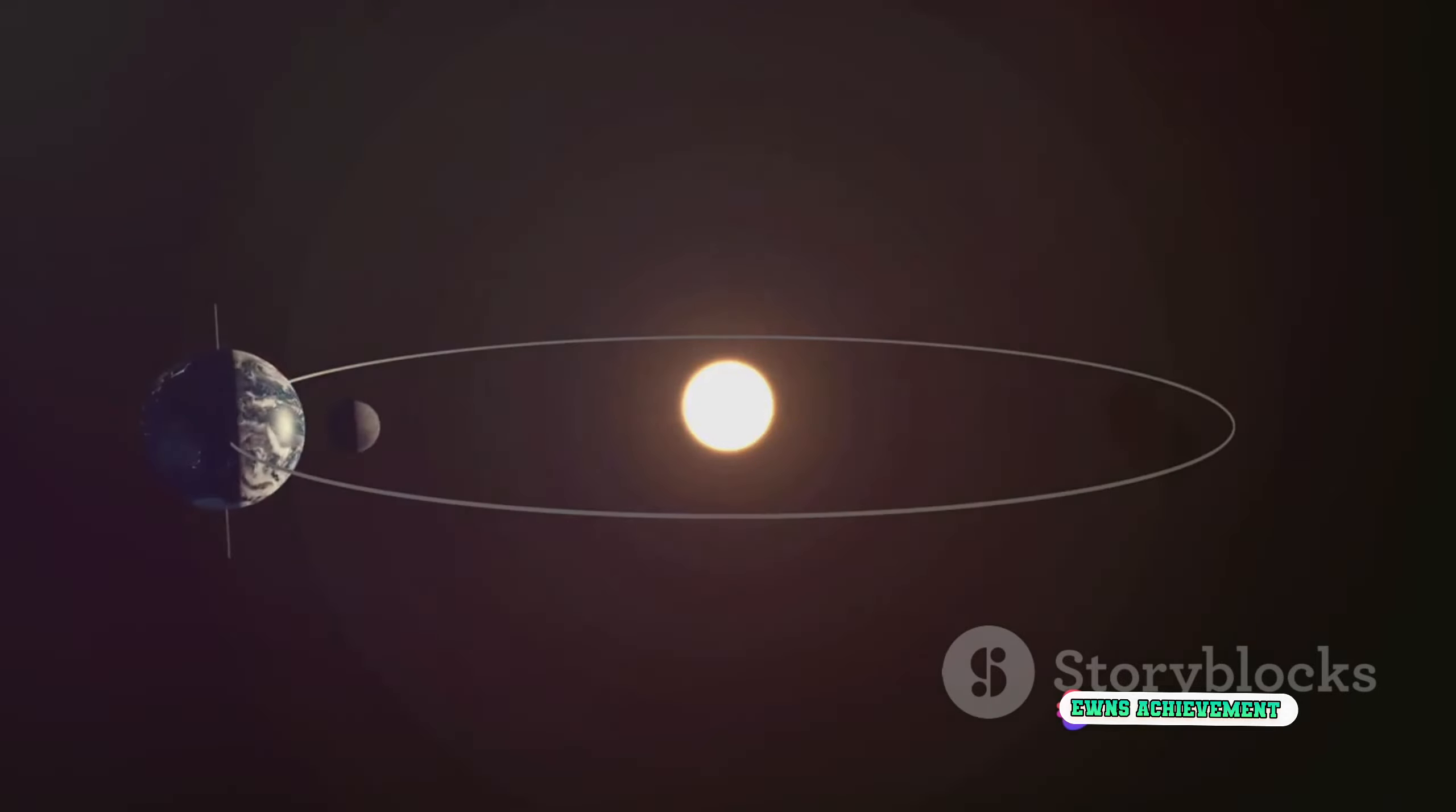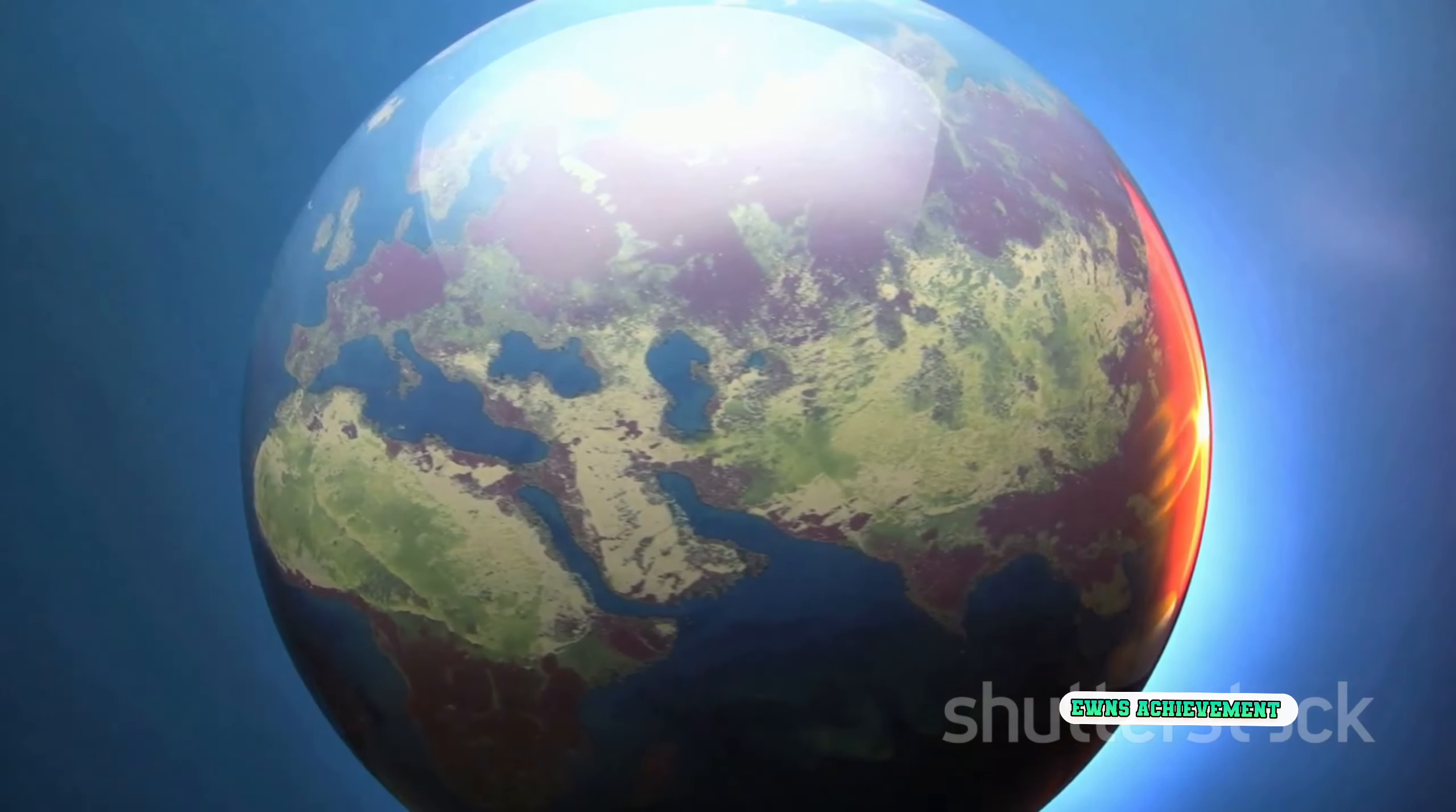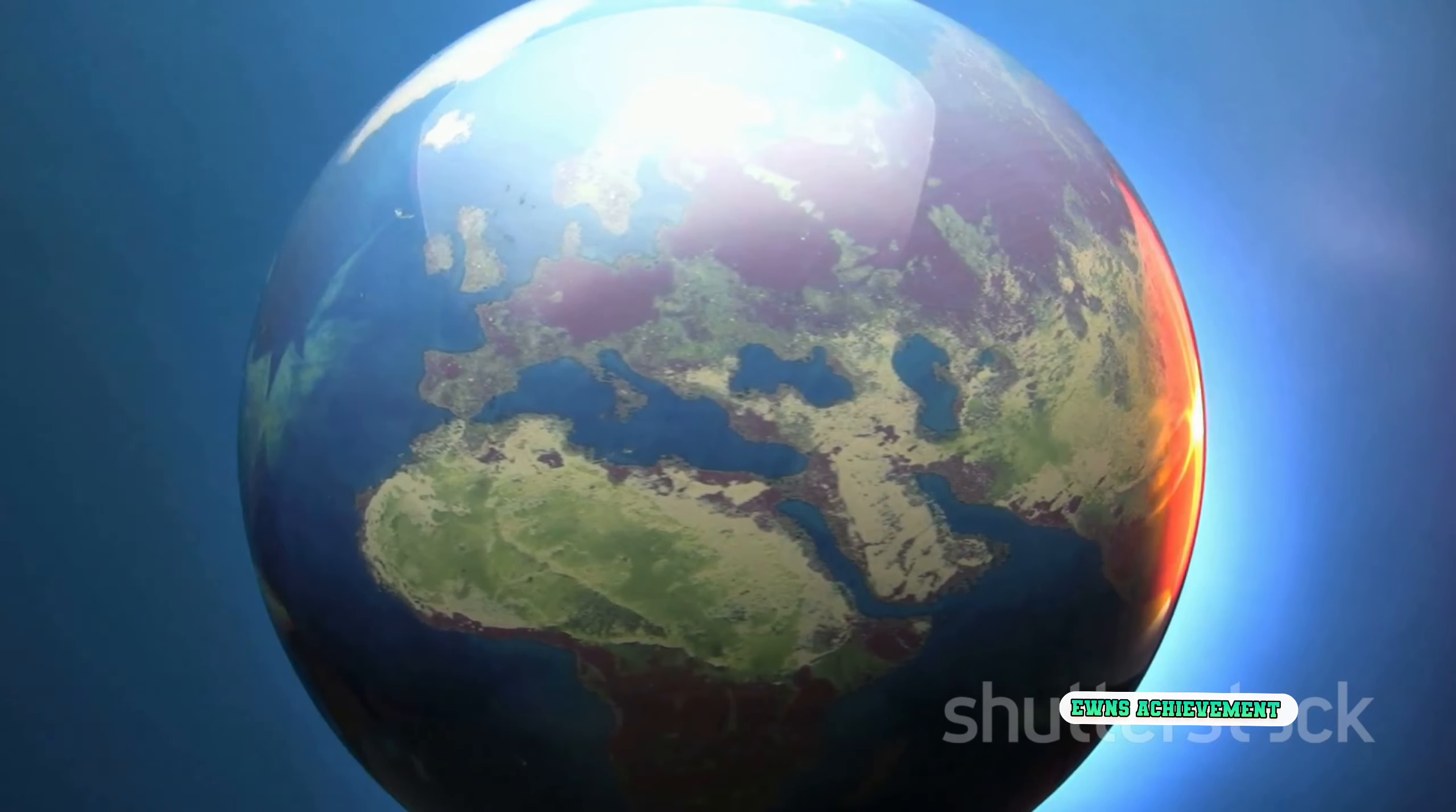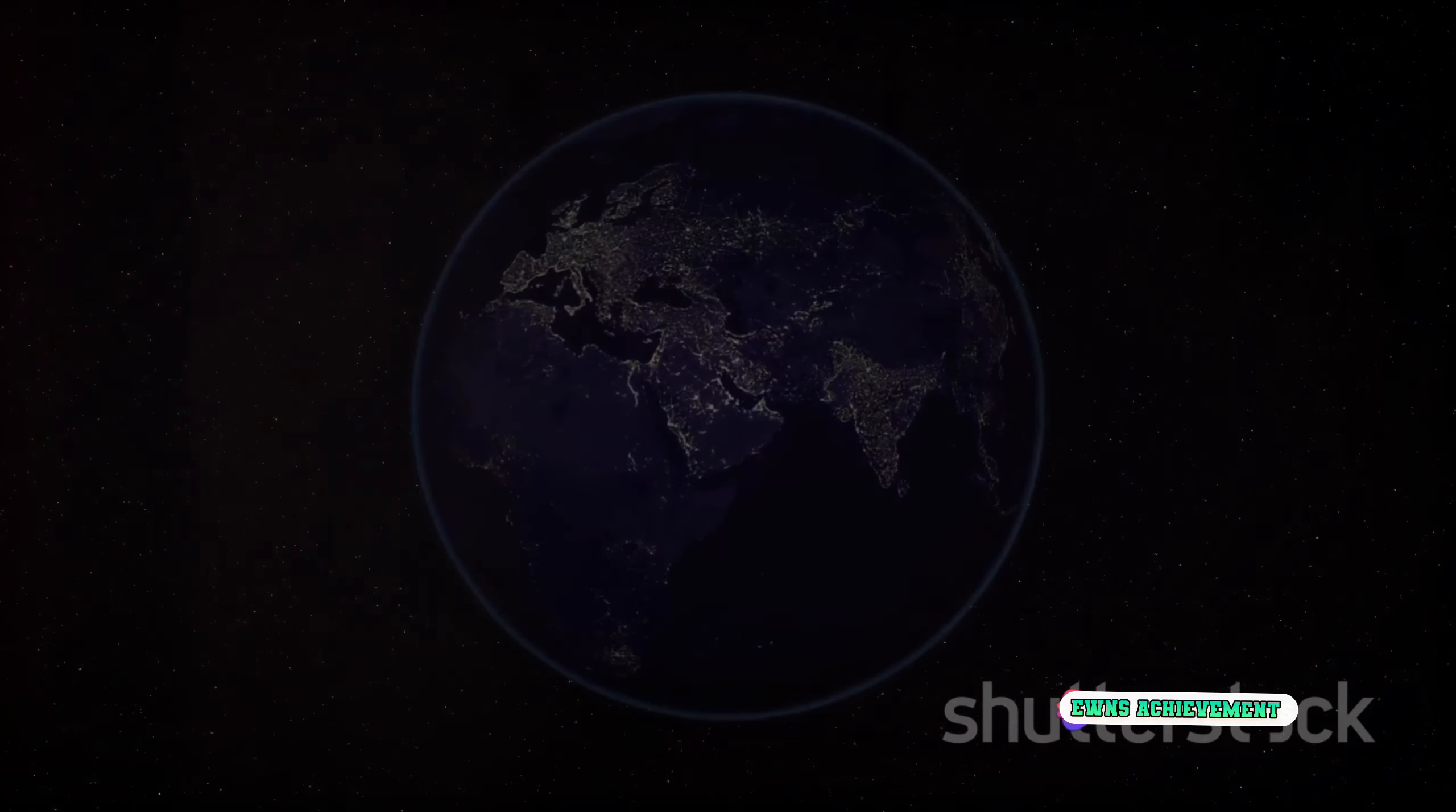Our seasons, for instance, are a direct result of our planet's tilted axis as it revolves around the sun. This tilt causes the sun's rays to hit different parts of the Earth more directly during different times of the year, resulting in the changing seasons.